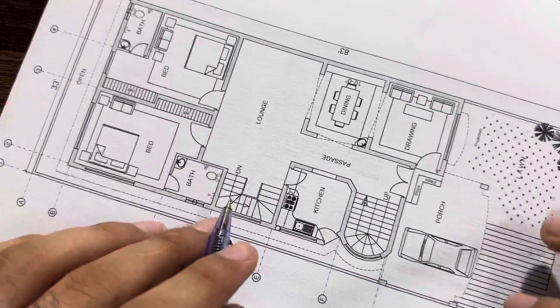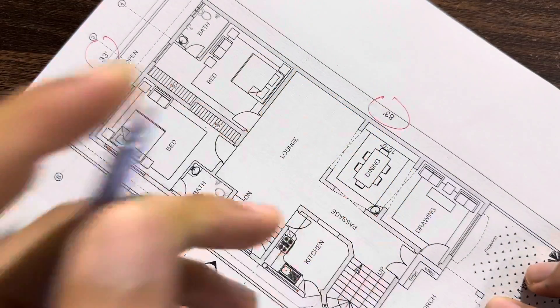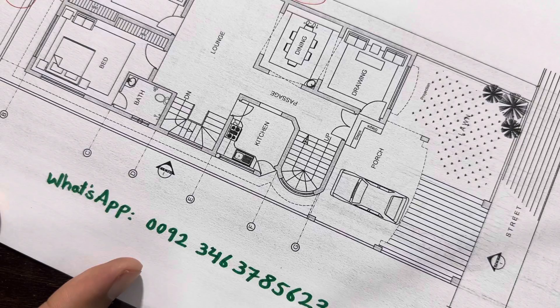Welcome back to Civil Engineering YouTube channel. House planning in the dimensions of 33 feet by 83 feet. I designed this house plan for one of my clients.